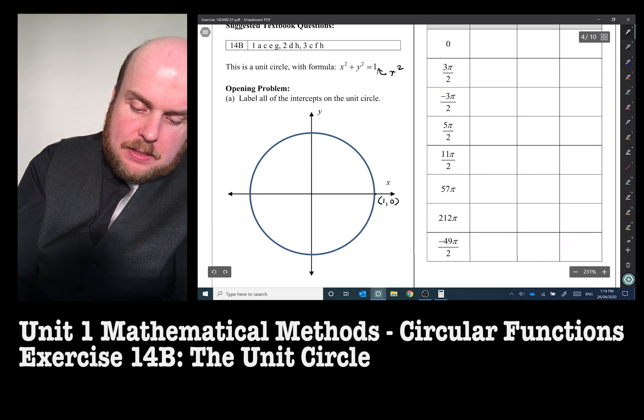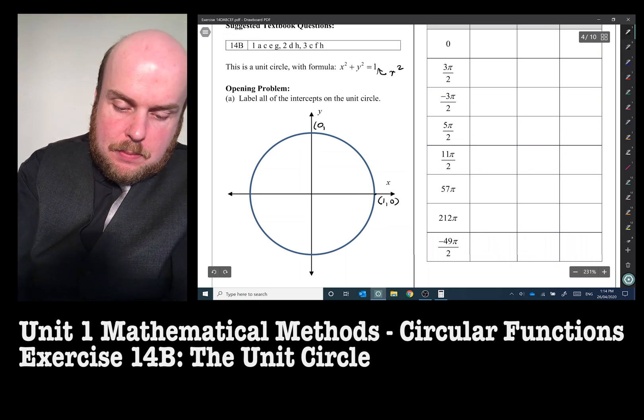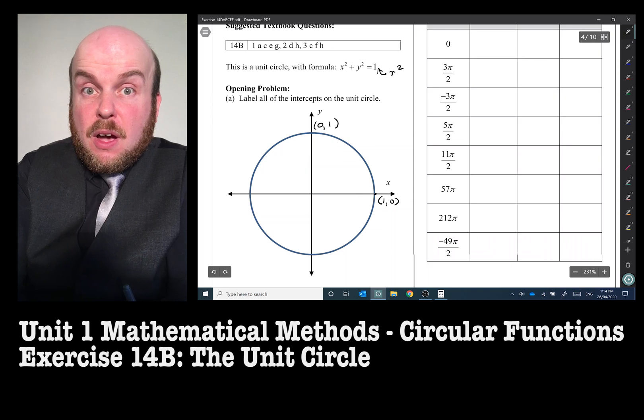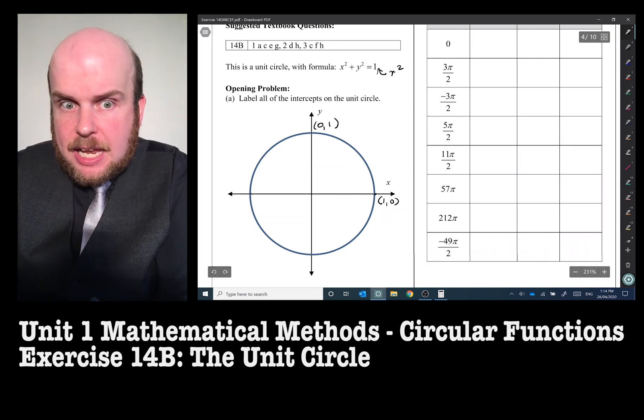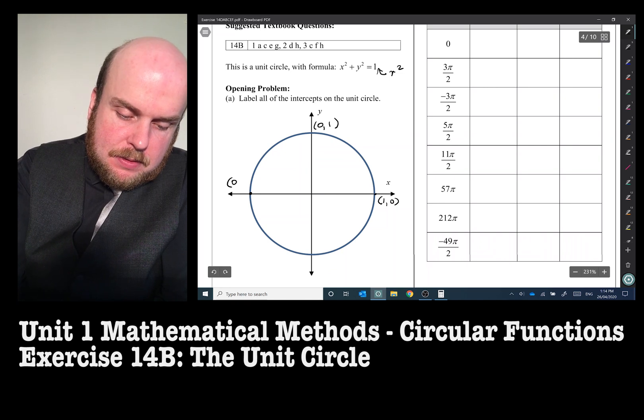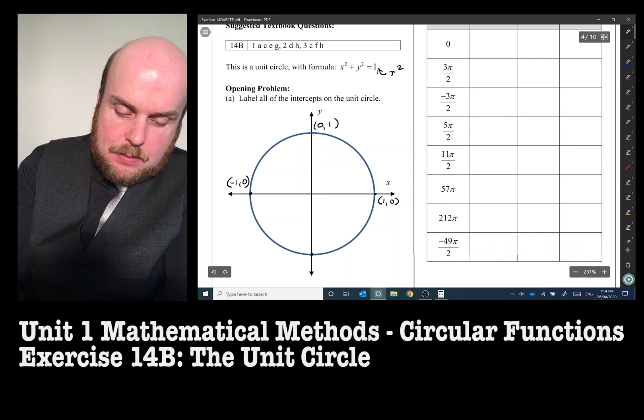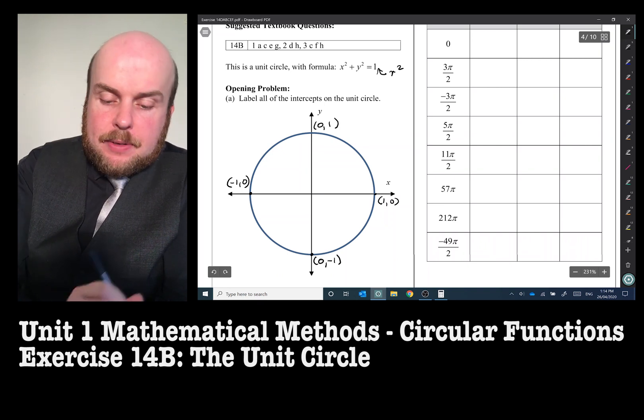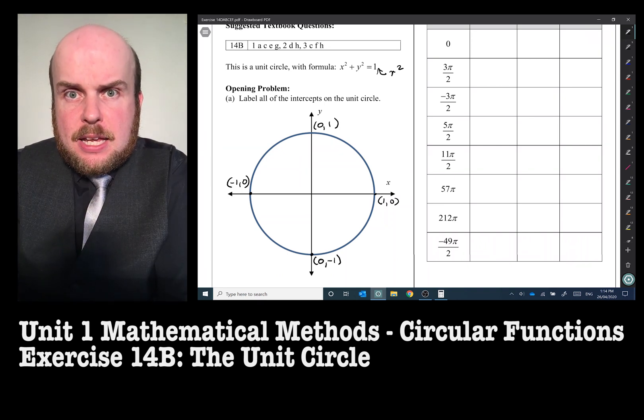So for example, this will be 1, 0. This will be 0, 1. Obviously, the negative sides have to have negatives in them. This will be negative 1, 0. And this will be 0, negative 1. And there are the intercepts.